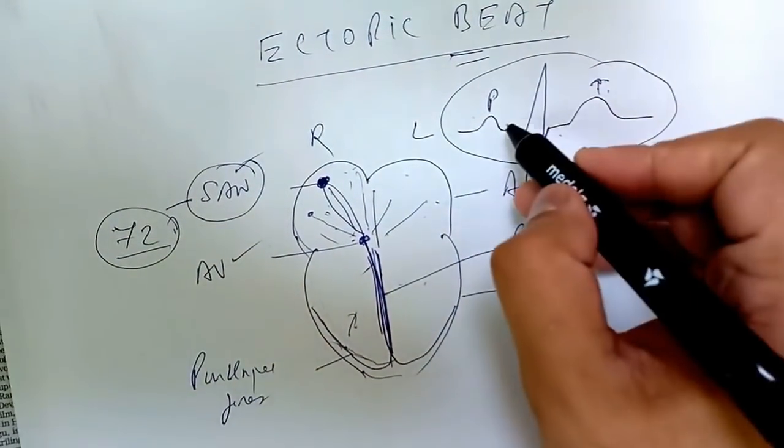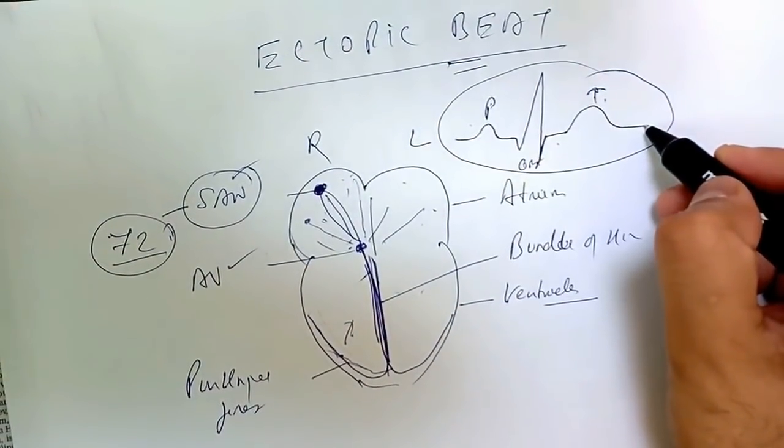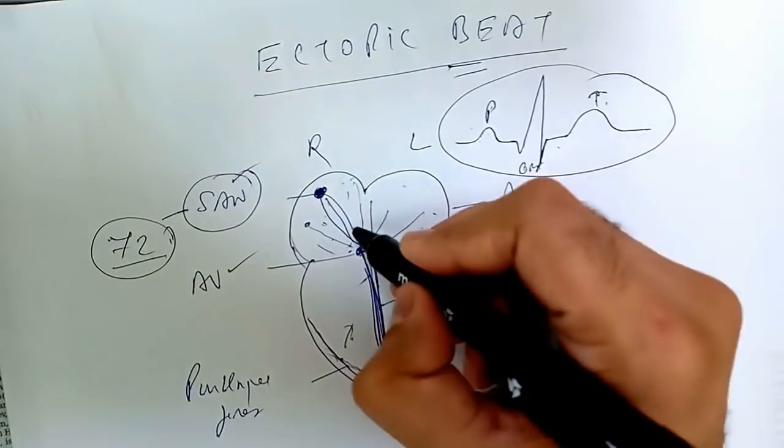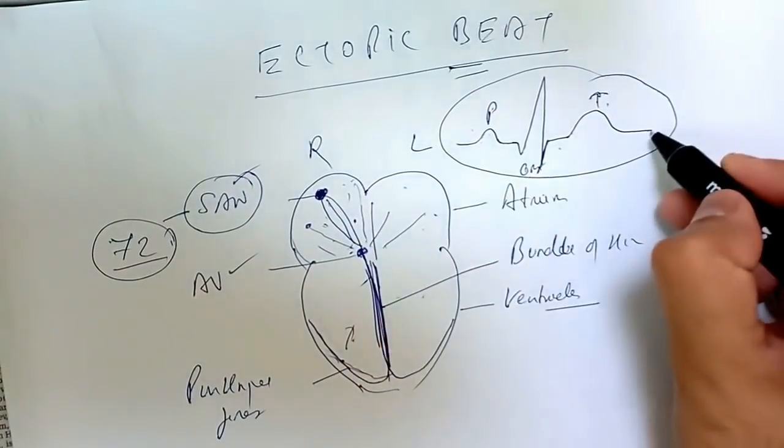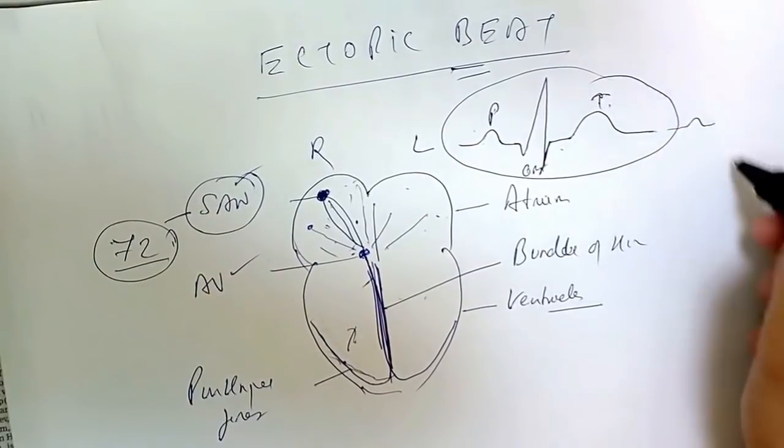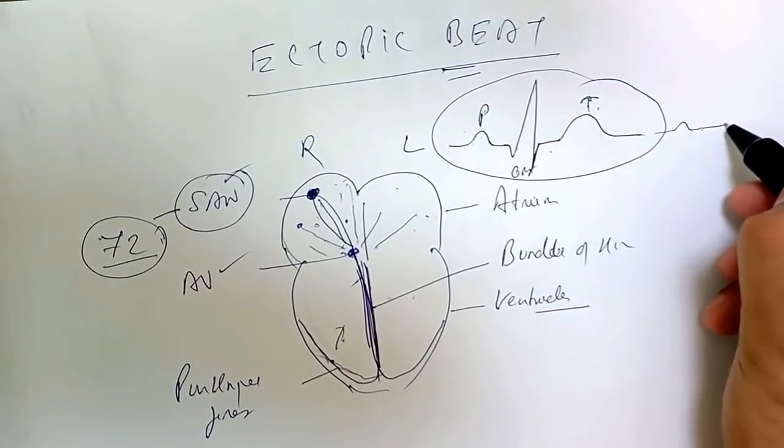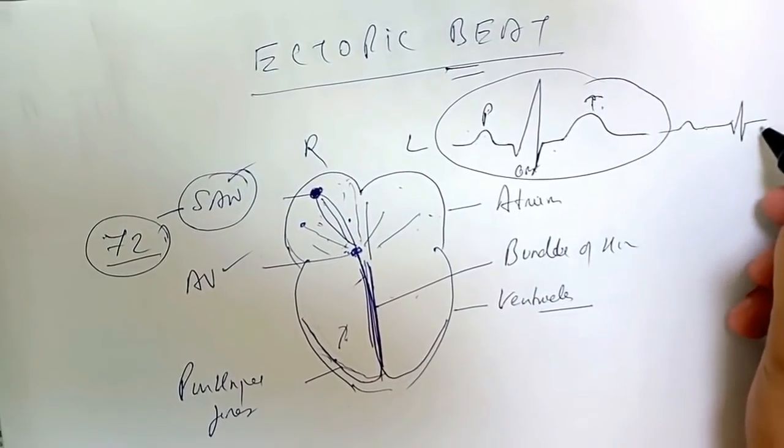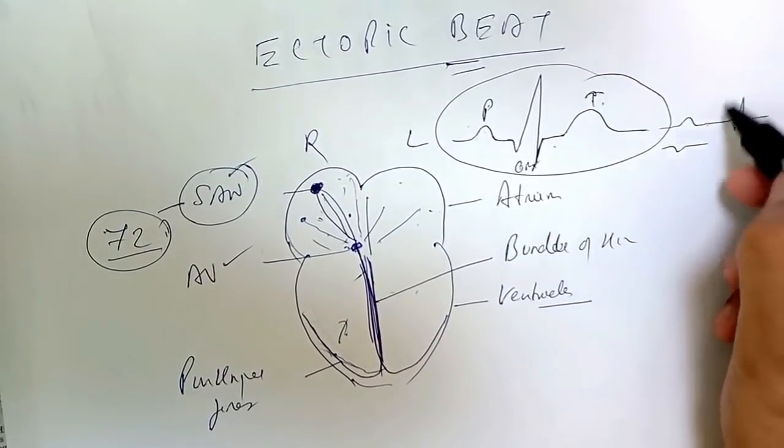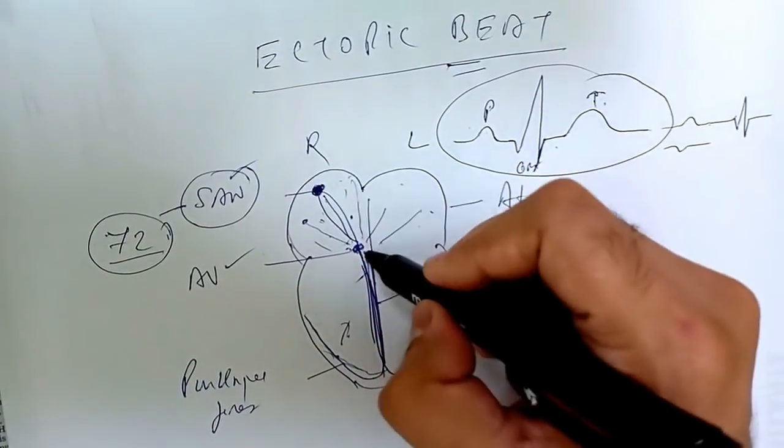When ectopic beats occur, the P-wave may not be coming normally, or the P-wave may come differently. If the beat is generated from a different place, the P-wave will be abnormal. The P-wave may be inverted, or the P-wave timing may be different. Sometimes if the beat is generated from the AV node, the P-wave will not appear at all. The QRS complex will come directly, or the P-wave may come after the QRS. There are changes in the P-wave from which you get to know that your beats are ectopic, whether atrial or ventricular.